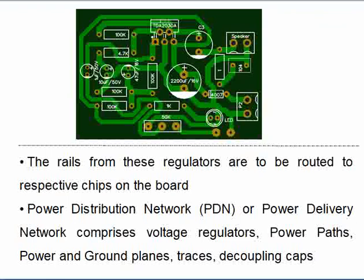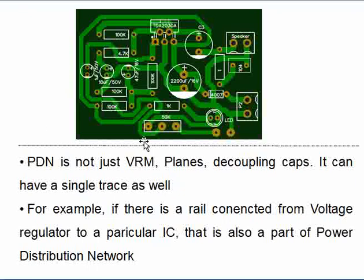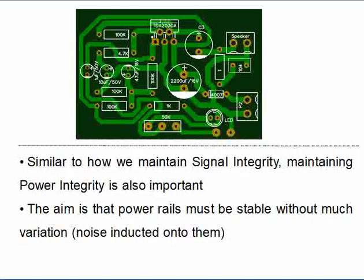In power integrity analysis, regulators are modeled as voltage regulator modules — VRMs — and that is where the term VRM comes from in PDN. Even a single trace connecting a voltage regulator module to an IC falls under the power distribution network — it's not just large planes. The power distribution network constitutes the regulators, planes, connectivity, capacitors, and wires.